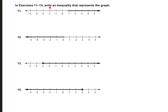In exercises 11 through 14, we need to write the inequality that represents the graph. Number 12 has an open circle and everything going below, so x < 0 — not less than or equal to because it's an open circle. Number 13 has a closed circle at −3 and everything above, so x ≥ −3. For numbers 11 and 14 on your own: number 11 is x > 1, and number 14 is x ≤ 3.